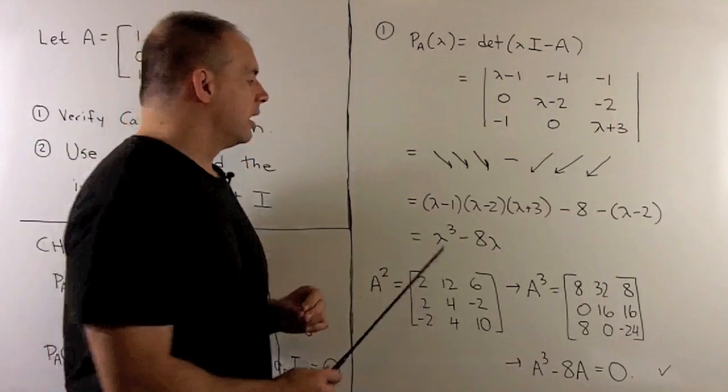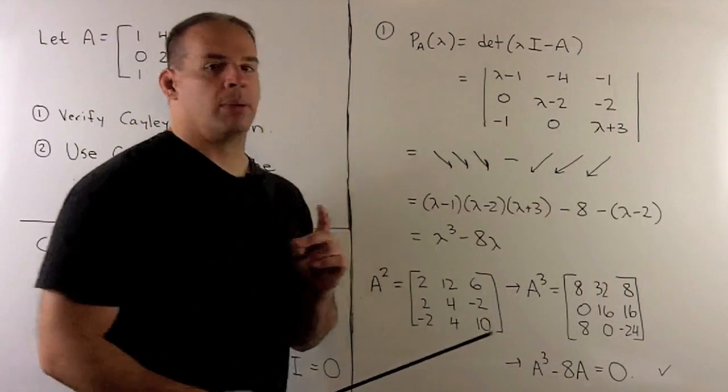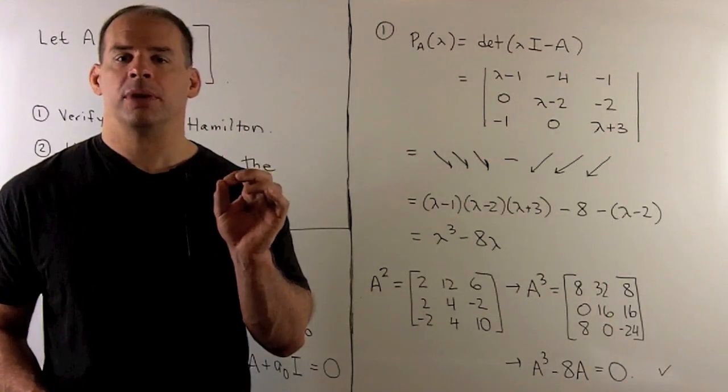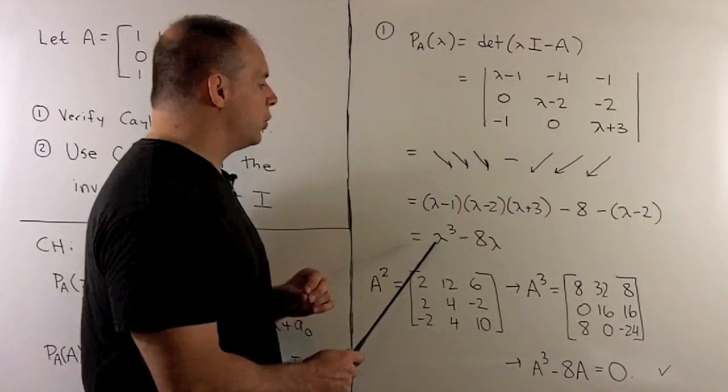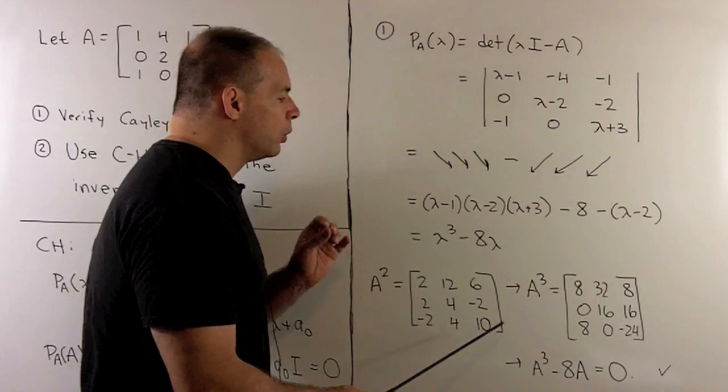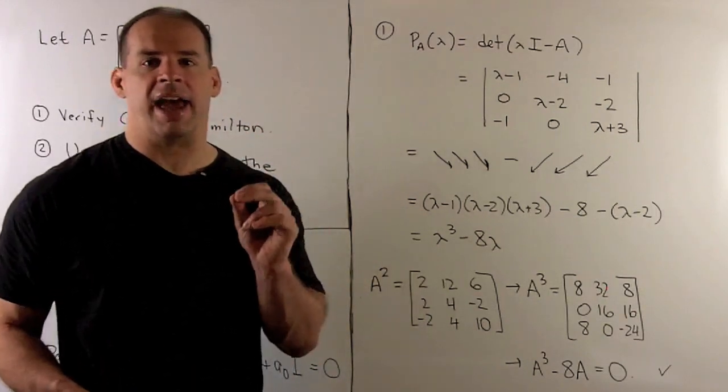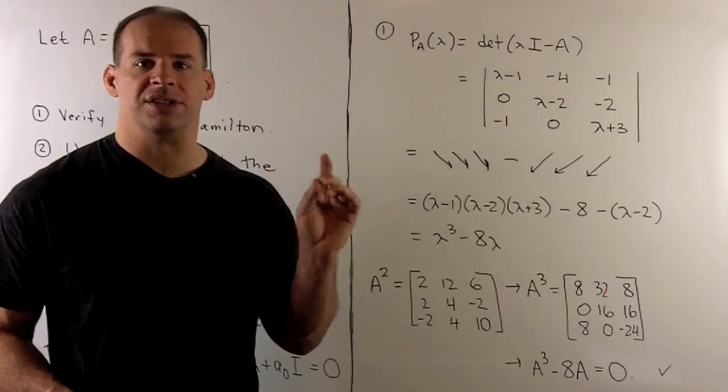That gives us lambda cubed minus 8 lambda. So, to verify Cayley-Hamilton, we just compute A cubed minus 8A. So, I work out A squared. We work out A cubed. And then we see that A cubed minus 8A is equal to the 3 by 3 zero matrix.